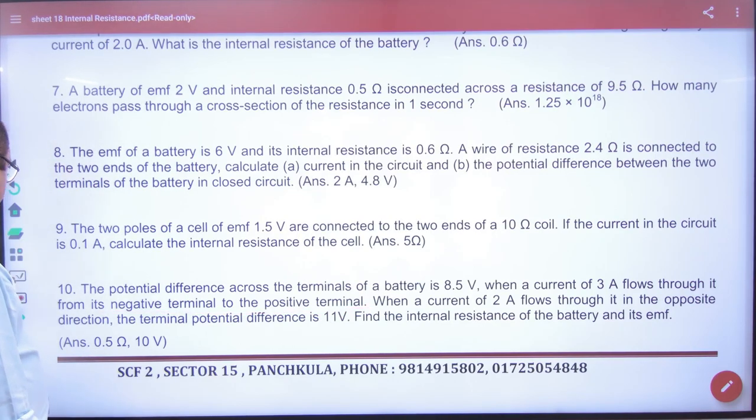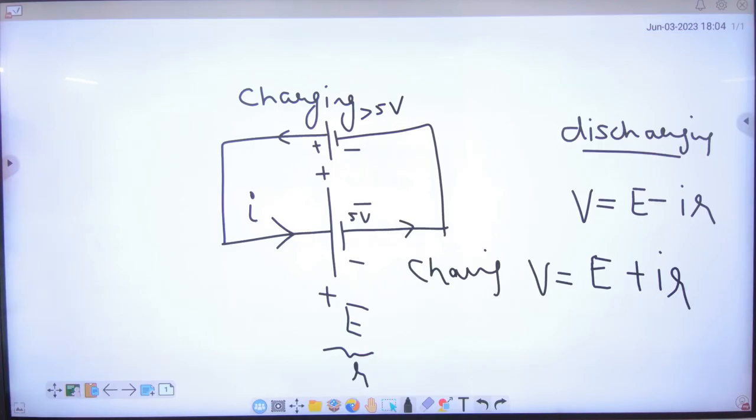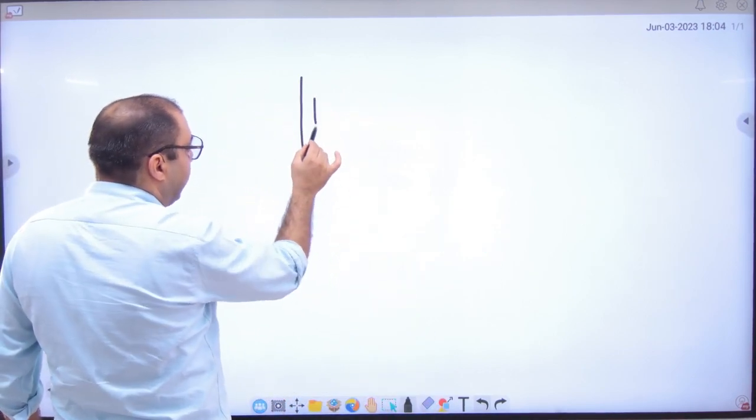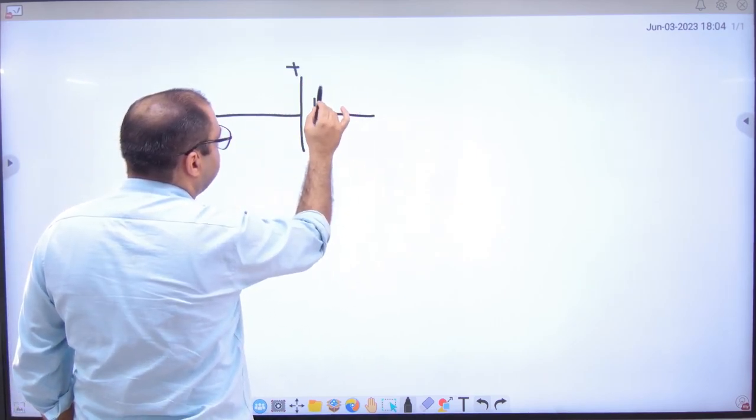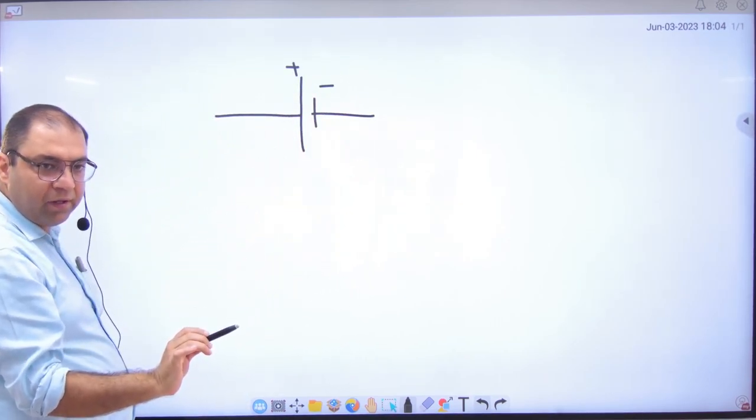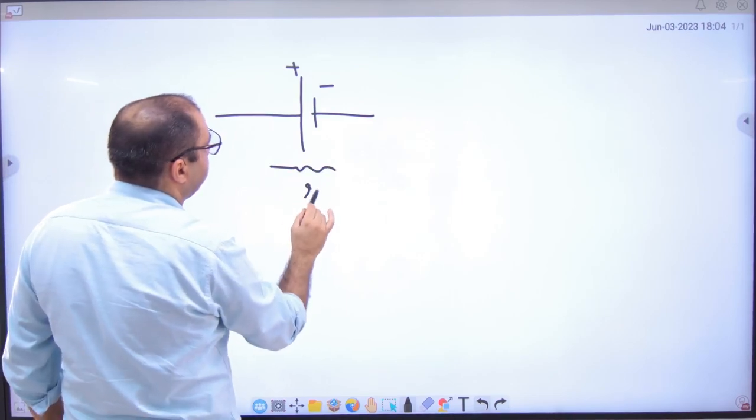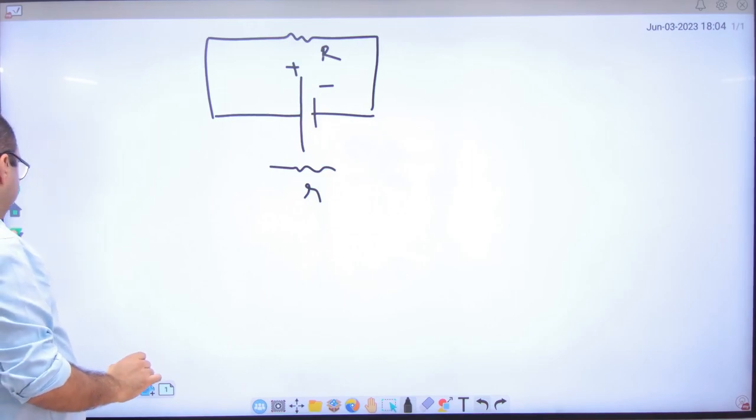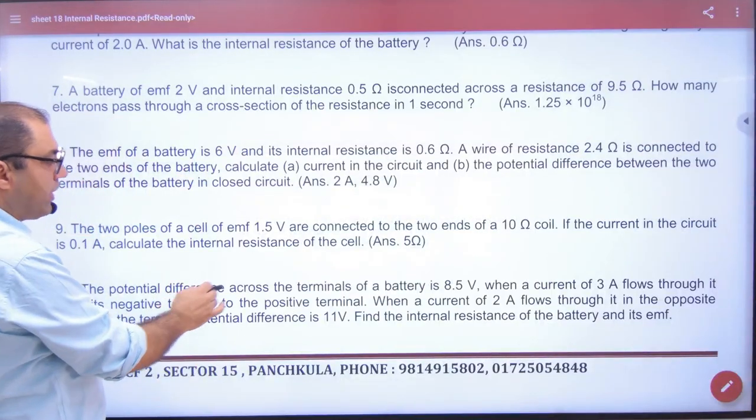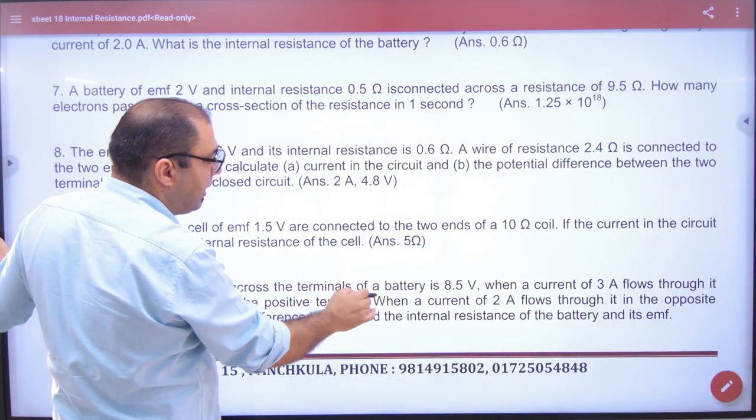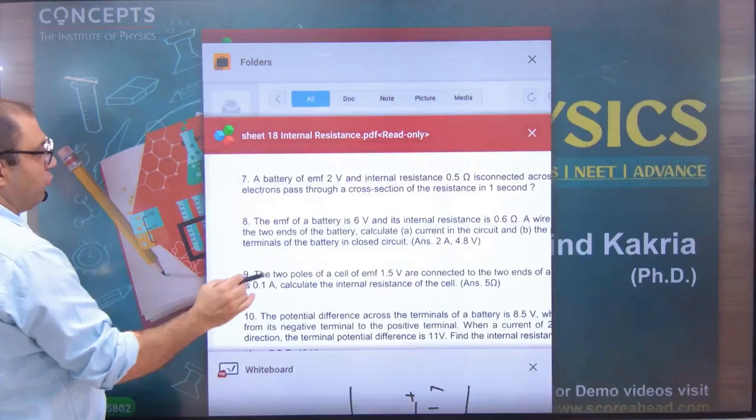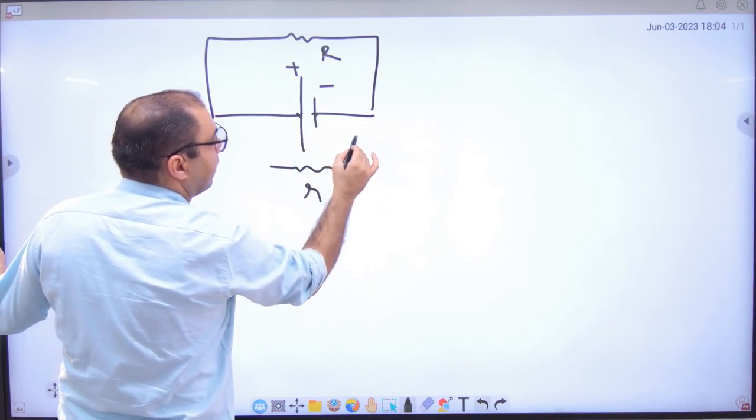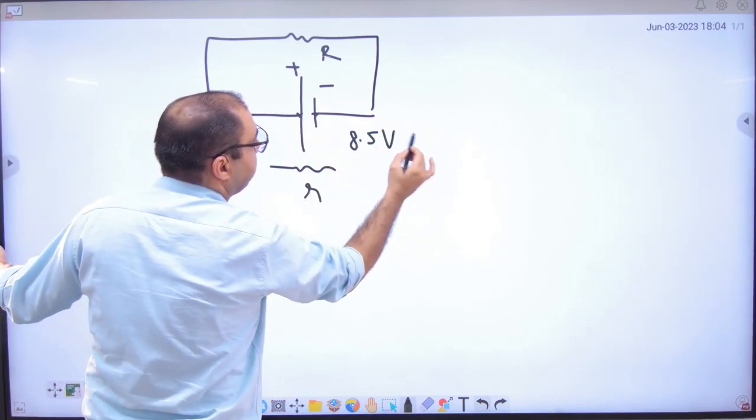In this question, you have a battery - this is positive, this is negative. There will be internal resistance and external resistance. And what is mentioned in the question? The potential difference across the terminal of the battery is 8.5V. This is given to you.